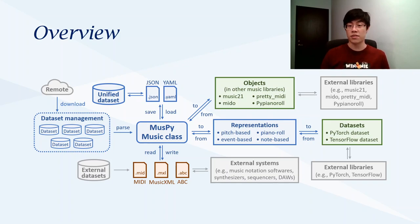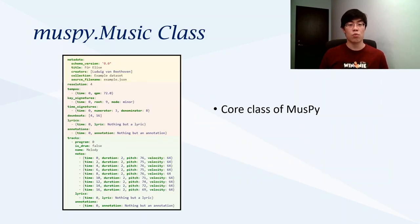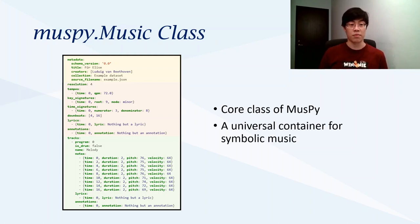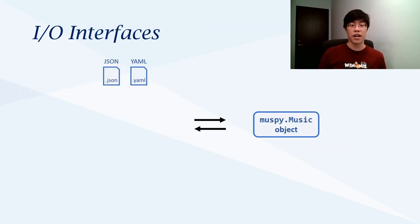So what is a MusePy.music class? It is a universal container for symbolic music that stores the tempos, key and time signatures, musical notes, as well as instrument information and metadata. Also, it can be serialized into JSON and YAML formats.